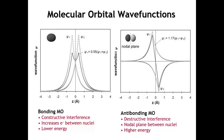If we plot the molecular orbital wave function along the internuclear axis, for the bonding MO we see constructive interference. In the anti-bonding MO, because the atomic orbital wave functions have different signs — positive and negative — they cancel out at Z equals zero, giving destructive interference. This leads to a nodal plane at Z equals zero. Because we've pushed the electron density away from the nuclei, this MO is going to be at higher energy.